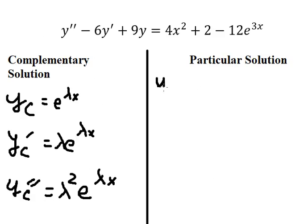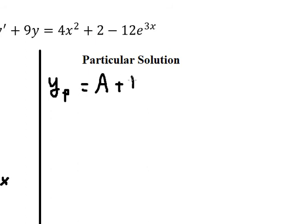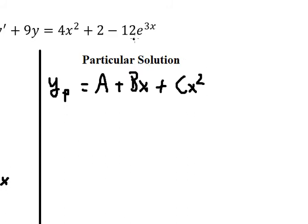Now for the particular solution. Because we have 4x² and a constant, the polynomial part of yp is A + Bx + Cx². Since we have a constant term we need A, and because of x² we need two powers of x in yp.